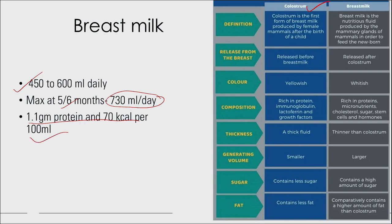The difference between colostrum and breast milk: colostrum is the first form of milk produced by female mammals after childbirth, while breast milk is the nutritious fluid produced by mammary glands that continues once colostrum stops. Colostrum is yellowish; breast milk is whitish. Colostrum is rich in protein, immunoglobulin, lactoferrin, and growth factors. Breast milk is rich in proteins, micronutrients, cholesterol, sugar, stem cells, and hormones.